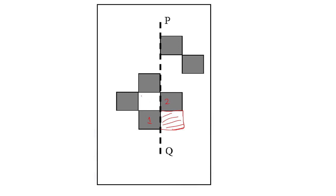Block number two is on the right-hand side of the line of symmetry, and corresponding to this block we have to make one more block at the left-hand side at this position. Block number three is on the left-hand side, so corresponding to this we will make one more block here.